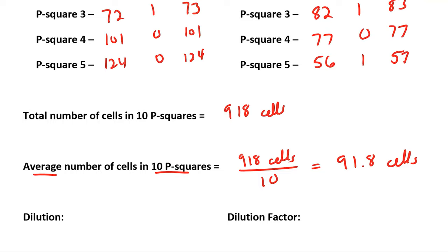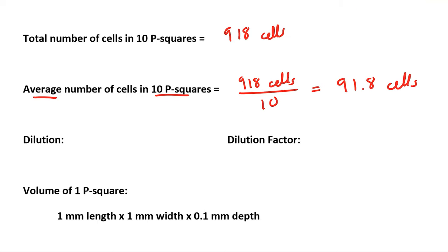In terms of dilution, we took one part cells and we added that one part trypan blue. Therefore, our dilution is 1 to 2, giving me a dilution factor of 2 to 1.